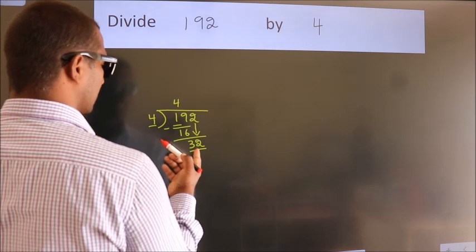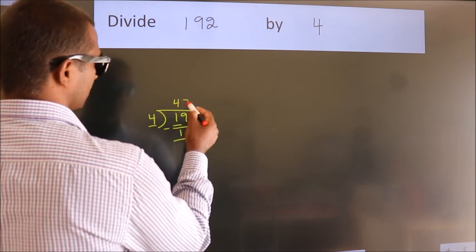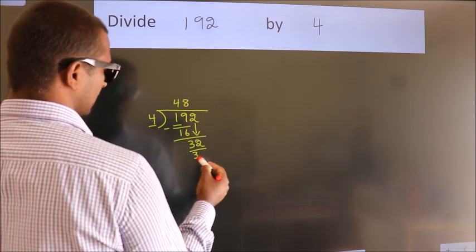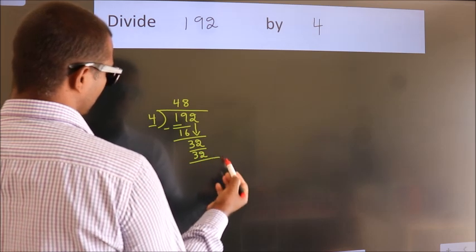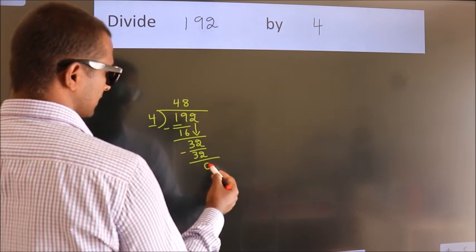When do we get 32? In the fourth table, 4 eights, 32. Now we subtract. We get 0.